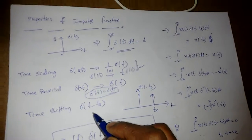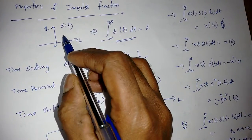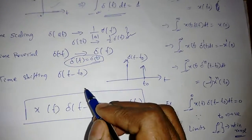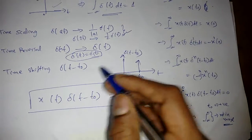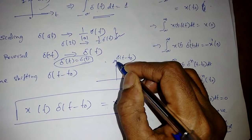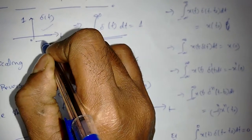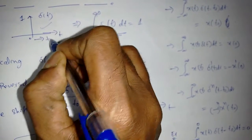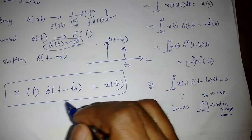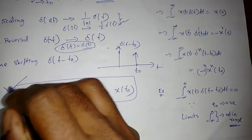Even if we reverse the signal we get the same signal. Now if time shifting is done, delta(t - t₀) is simply delayed by t₀, so it will become nonzero at t equal to t₀. That is the time shifting property.